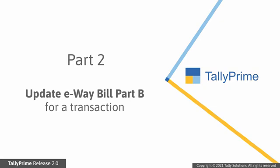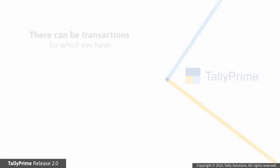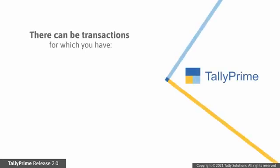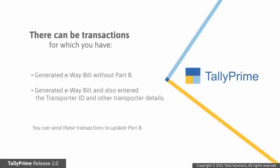Now let's see how to update e-way bill Part B for a transaction. There can be some transactions for which you have generated an e-way bill without Part B. This happens when you do not have the transporter details such as transporter ID, vehicle number and other mandatory information for e-way bill generation with Part B, so you will be updating Part B later.